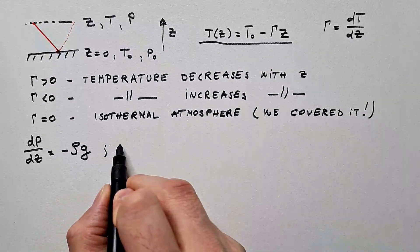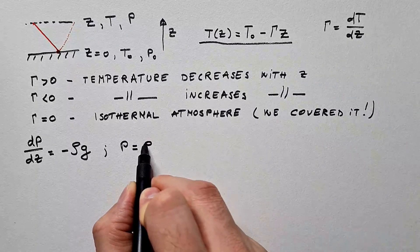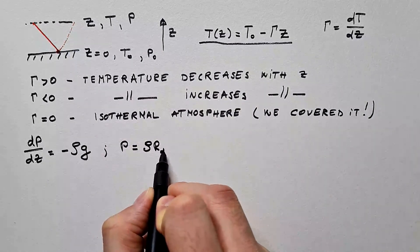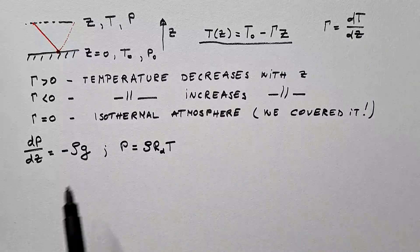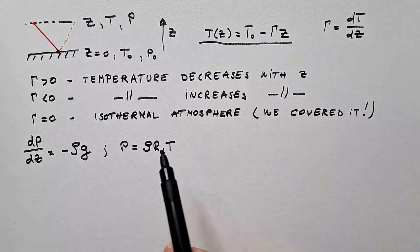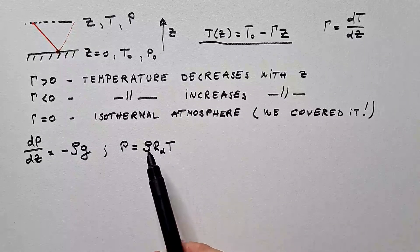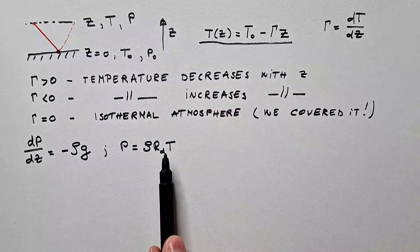I will combine hydrostatic equation with the equation of state, that pressure is ρRdT, where Rd is gas constant of dry air, and T is temperature.